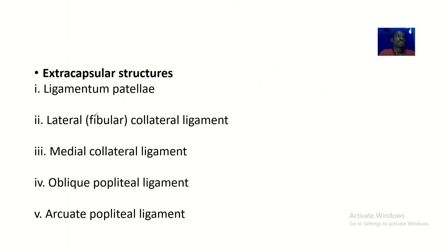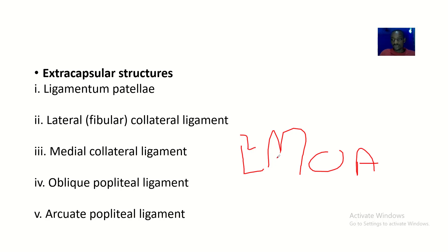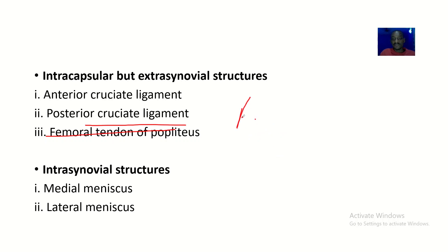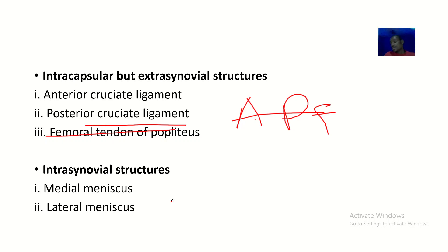To help remember everything, here are some mnemonics. For extra-capsular structures, use L²MOA: the two L's stand for Ligamentum Patellae and Lateral (Fibular) Collateral Ligament; M is Medial Collateral Ligament; O is Oblique Popliteal Ligament; A is Arcuate Ligament. For intra-capsular structures, use APF: Anterior Cruciate Ligament, Posterior Cruciate Ligament, and Femoral Tendon of Popliteus. For intra-synovial structures, use ML: Medial Meniscus and Lateral Meniscus.